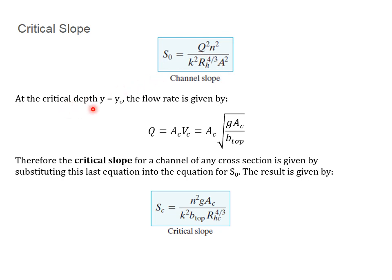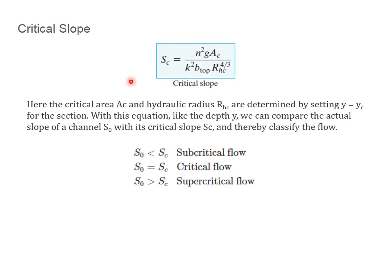At the critical depth, Y equals YC. The flow rate is given by Q equals AC times VC. These are both critical values. VC, we know, is the square root of gAC over the top width. Therefore, for the critical slope for a channel of any cross-section is given by substituting this last equation into the equation for S0 at the top. The result is known as the critical slope, SC.